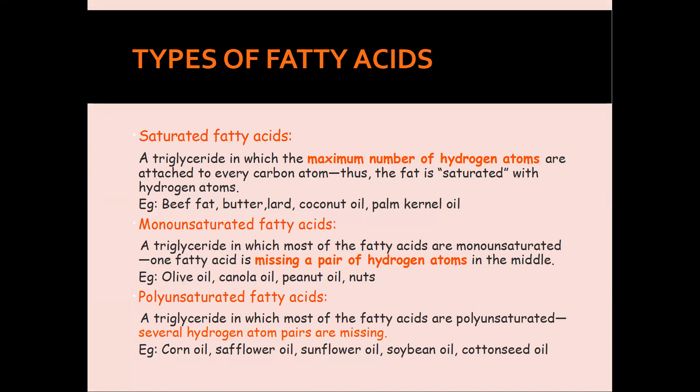Before discussing triglycerides and phospholipids further, we need to understand fatty acids — often considered the smallest building blocks of lipids. When we talk about saturated fat, monounsaturated fat, or polyunsaturated fat, we are talking about fatty acids. There are three classes: saturated fatty acids, which have the maximum number of hydrogen atoms; monounsaturated fatty acids, which are missing just one pair of hydrogen atoms (two hydrogens) in the middle; and polyunsaturated fatty acids, which are missing several pairs of hydrogen atoms.